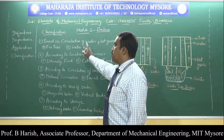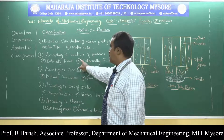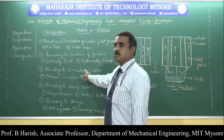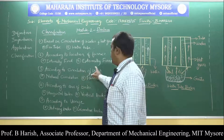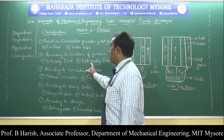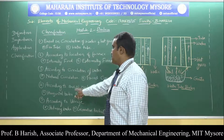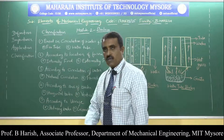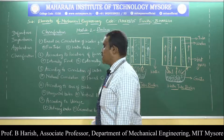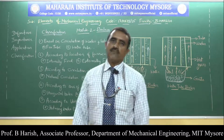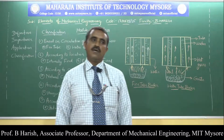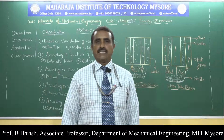So these are the different parameters based on which boilers are classified: circulation of water and hot gases, location of furnace, circulation of water, axis of the boiler, and usage.